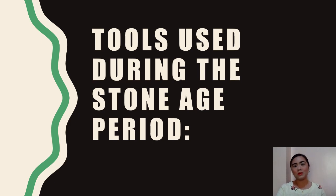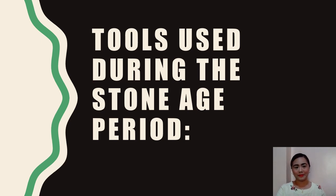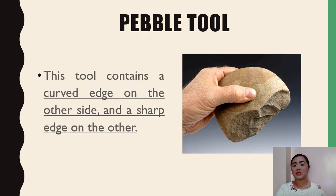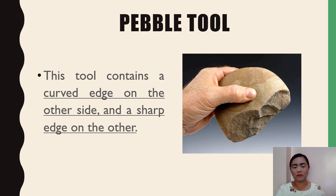Now let us discuss the tools used during the Stone Age. The first type is the pebble tool, which has a curved edge on one side and a sharp edge on the other. The pebble tool is the very first cutting device created by humans and is considered the oldest type of tool. It is actually a prototype of our modern knives — the handle on one side and the blade on the opposite side.